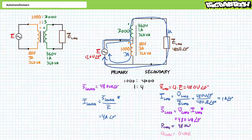Consider the amount of power capable of being transferred by the auto transformer. When configured as a traditional transformer, it was limited to a rating of 360 volt amperes. These same windings configured as a step-up auto transformer allows the device to transfer 480 volt amperes — an increase of 1.33 times — again without exceeding the rating of either winding.